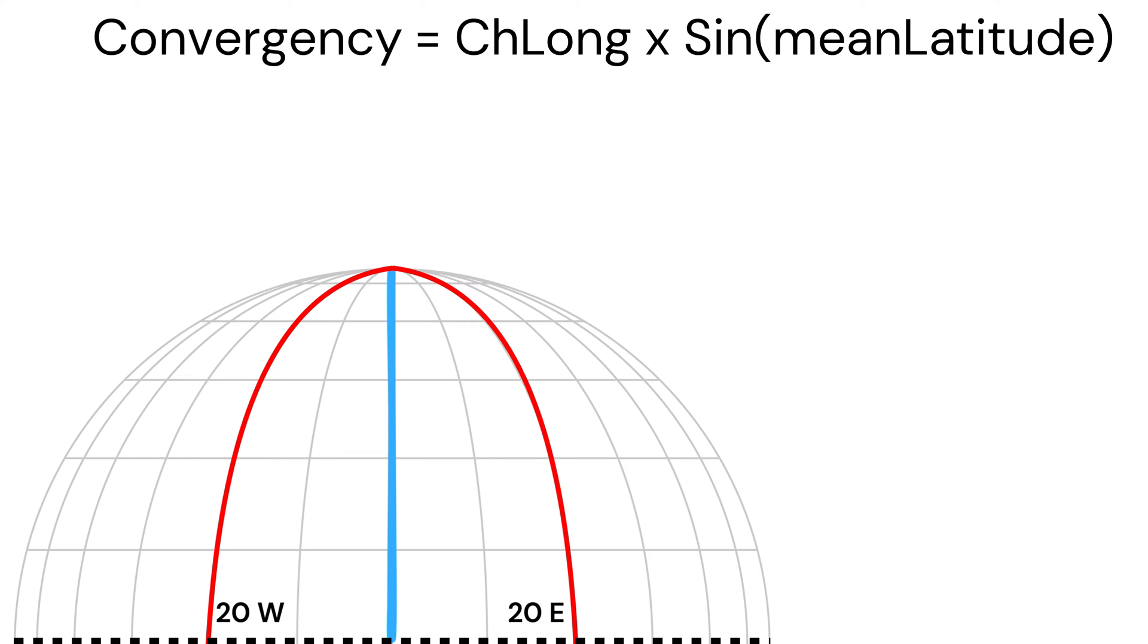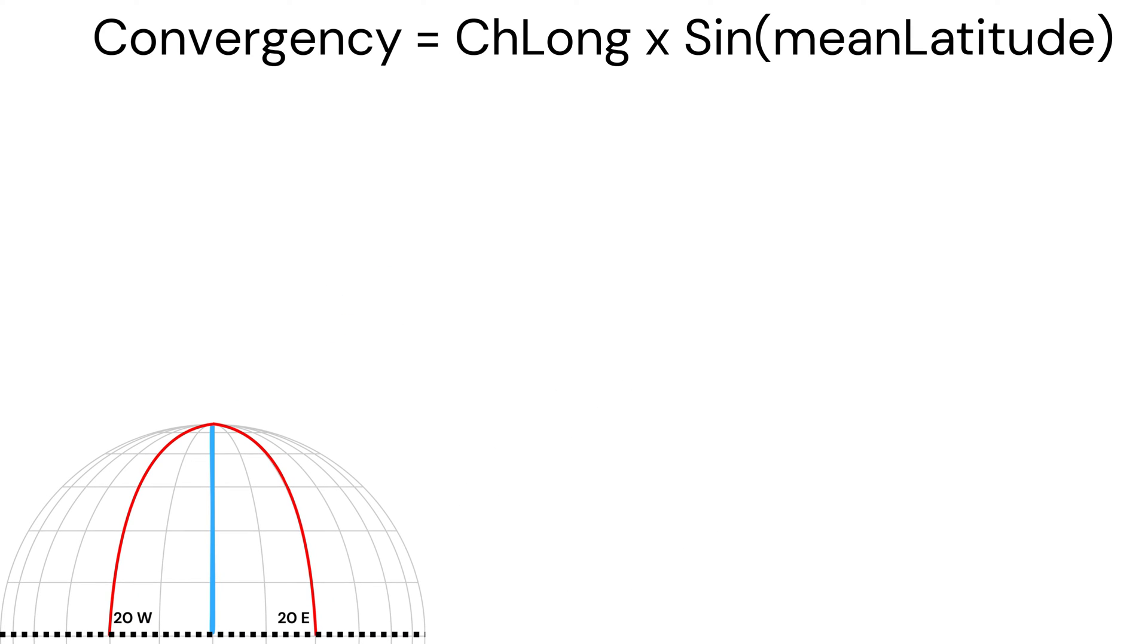Remember how we use the same 20 east and 20 west as example, but we got different values ranging from 0 to 40. Our ChLong value always remains the same, 40 degrees. The only thing that changed is the latitudes.